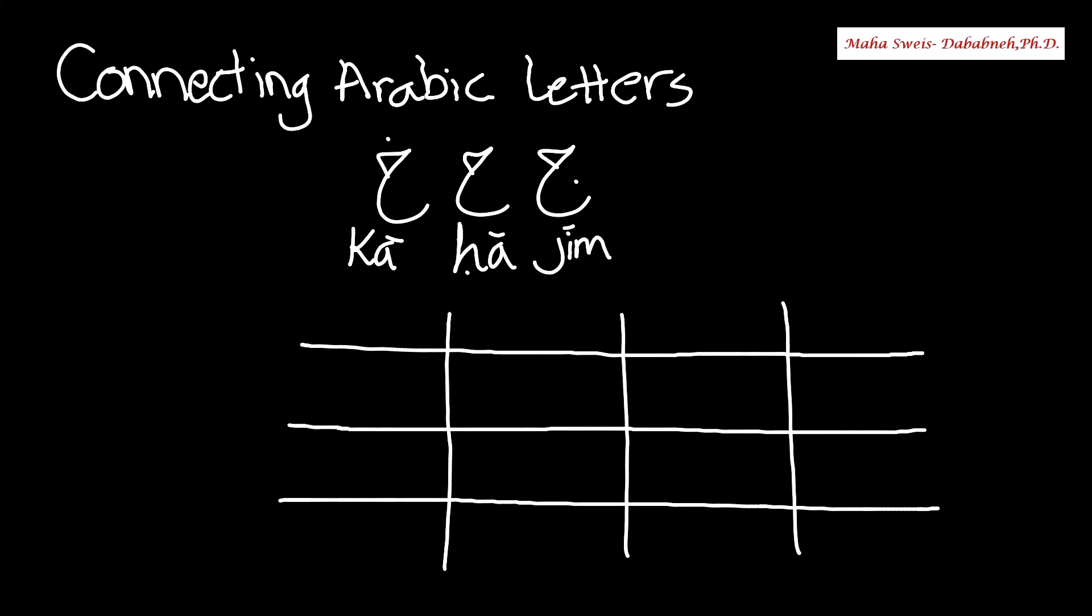In this video I will continue introducing the Arabic alphabets. We have today Jim, we have Ha, and we have Kha. As you can see, these letters share one basic shape and are differentiated by the dot and its placement.